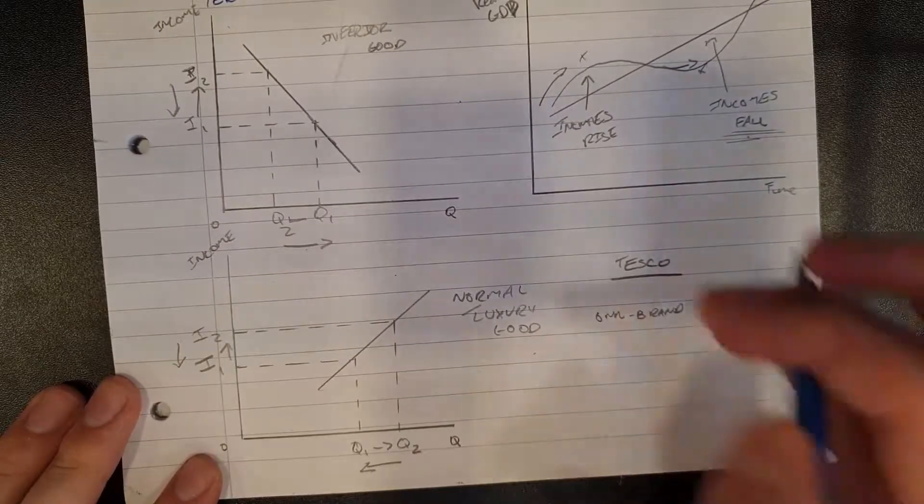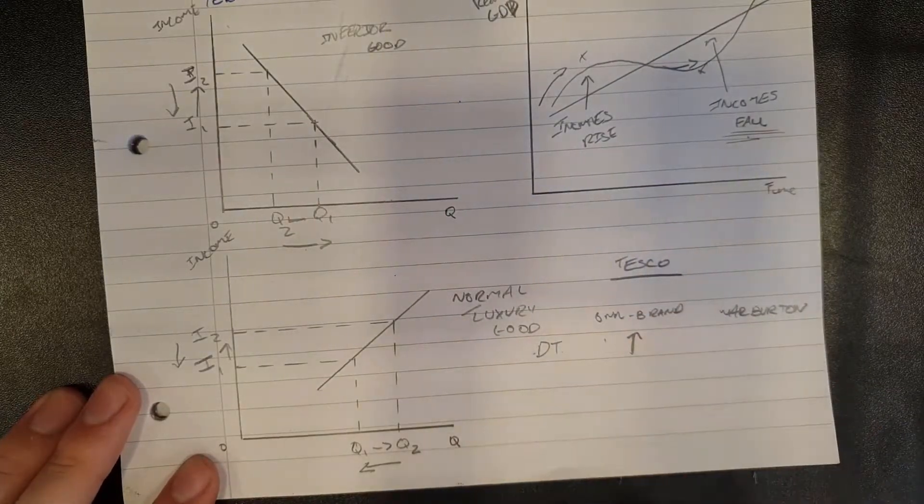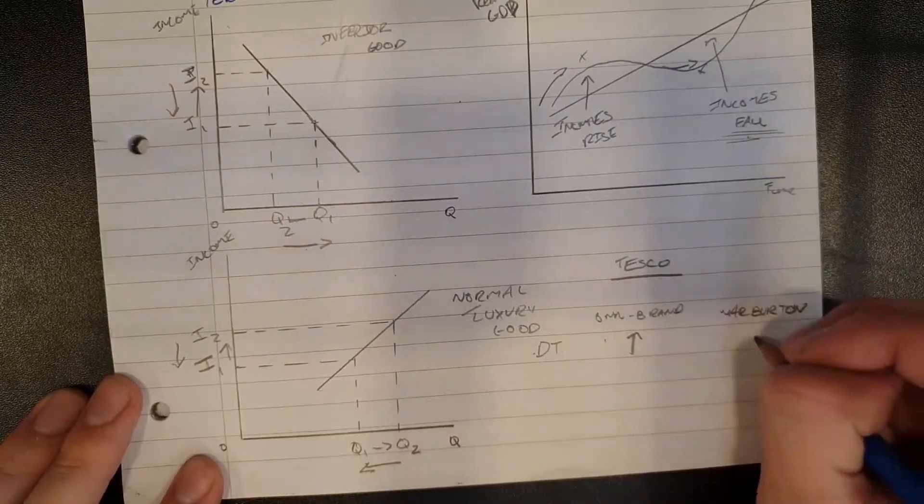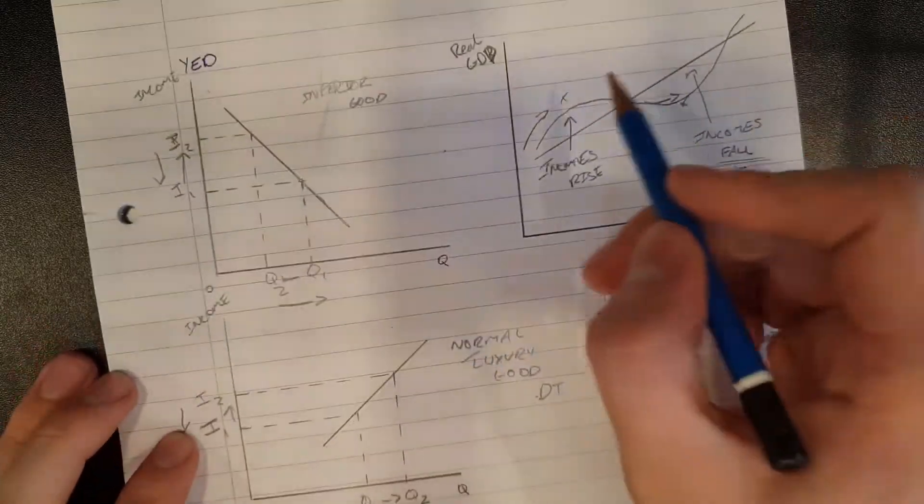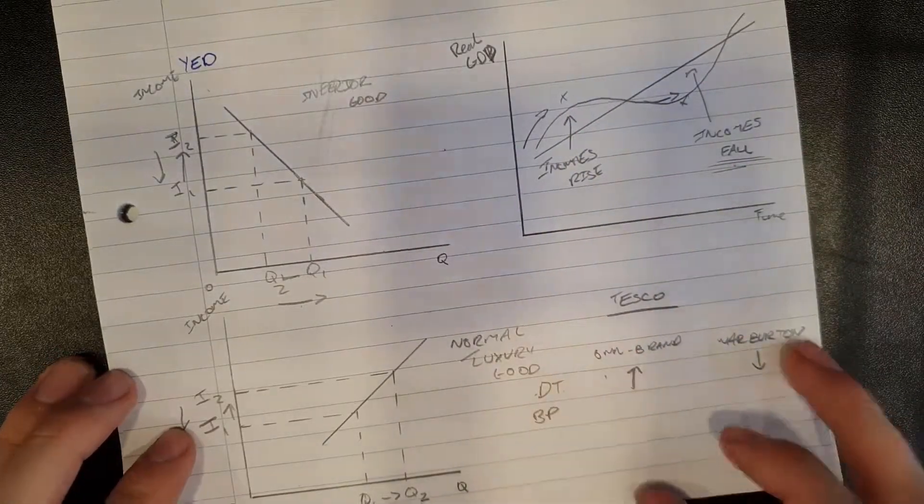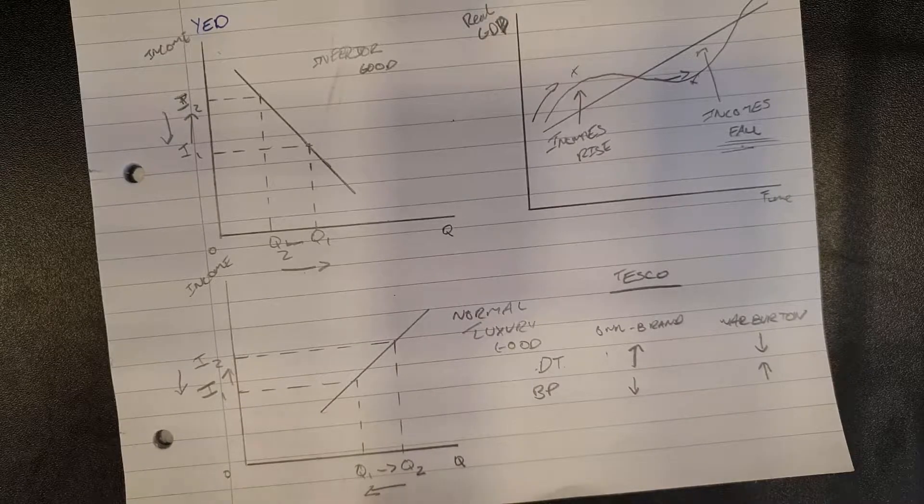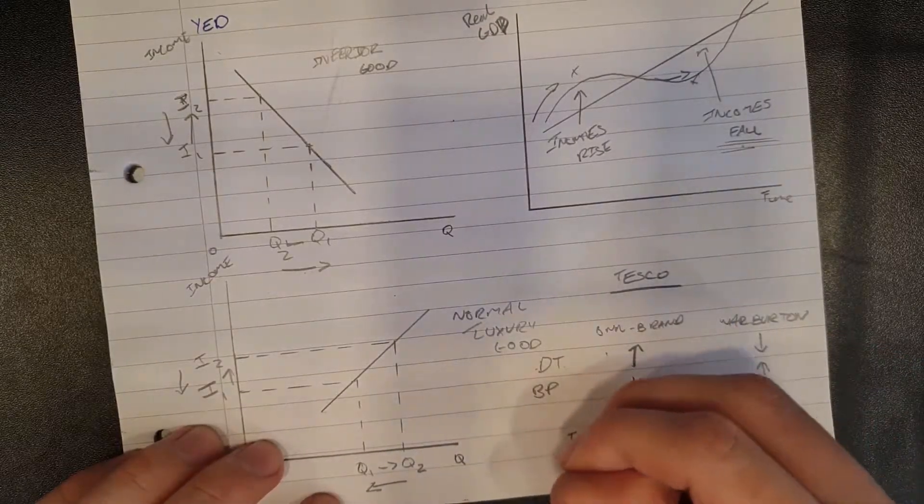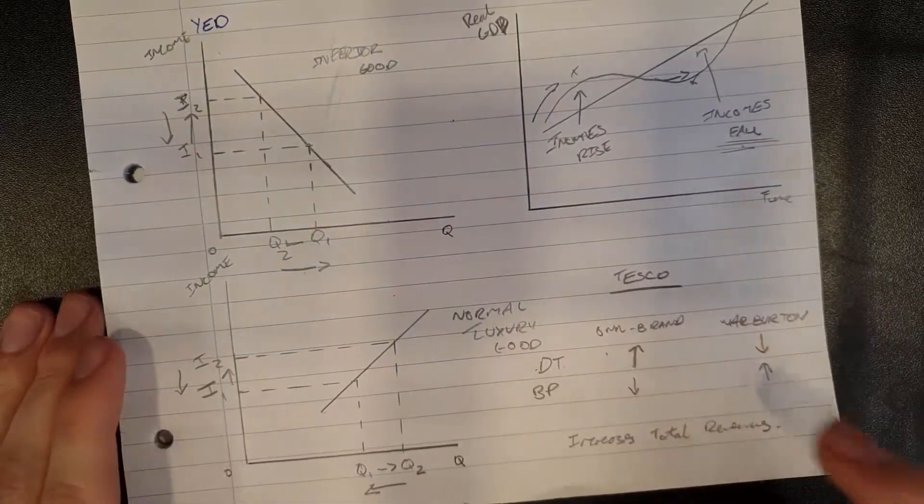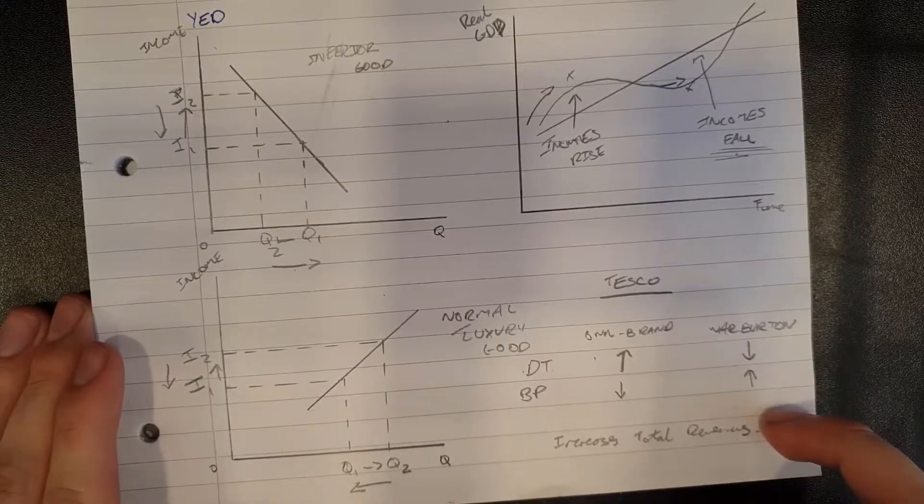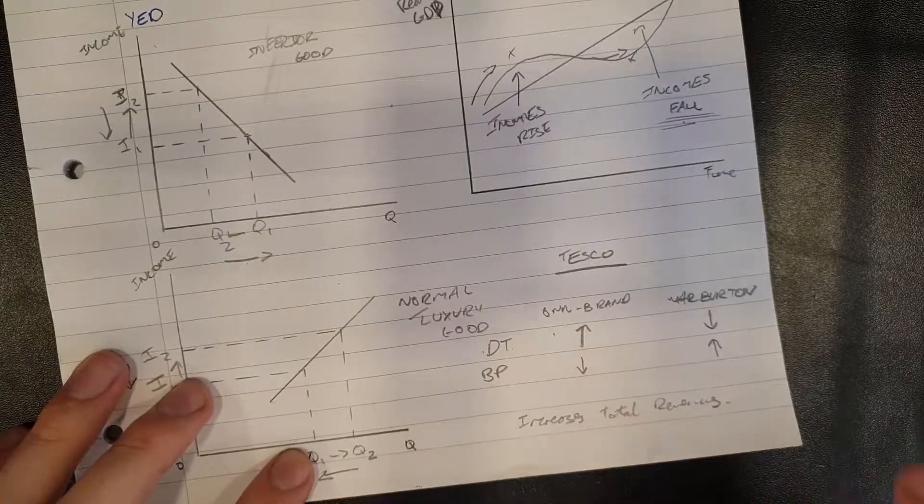Right. So what I could do is then increase this in a downturn. I could then increase the supply of my own brand bread to cater to larger demand and decrease the supply of the Warburton's bread to cater to a fall in demand there. Now, in an economic boom, in a boom period, I could just simply do the opposite to better cater to demand. And then this elasticity would help increase total revenues for Tesco. And this brings us all the way full circle to right at the beginning of the video where I said firms are profit maximizers. That is what everything we do here is all about. And that's how we can use YED to improve our profits.